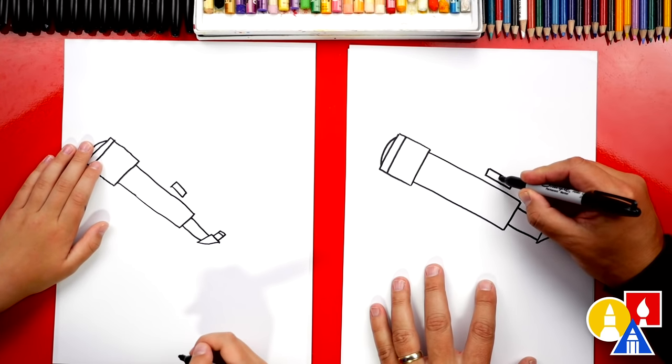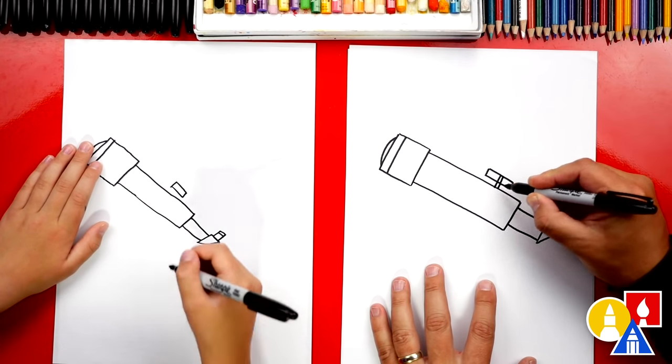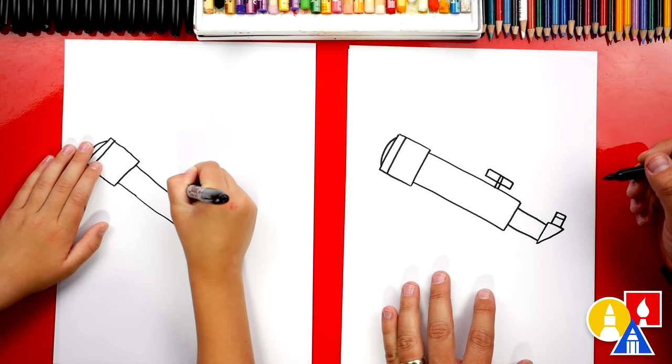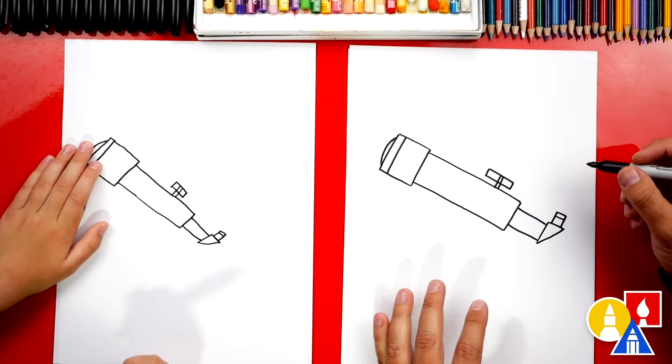And then let's connect this rectangle shape to the main telescope tube. That looks awesome. Good job.